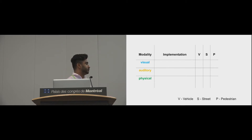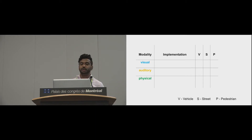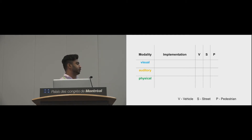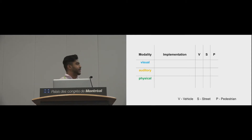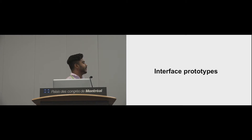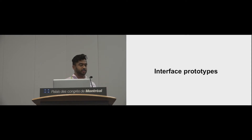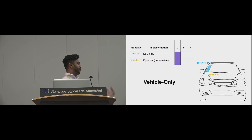Once we had our design space, we wanted to try this out in practice and see whether it would actually help pedestrians make crossing decisions. Because the design space is vast with many possible combinations, we made four prototypes capturing the essence of the space. These prototypes incorporated different physical locations of cues, balanced the available modalities, and each had both an awareness cue — the vehicle has seen the pedestrian — and an intent cue — I'm going to stop or not stop.